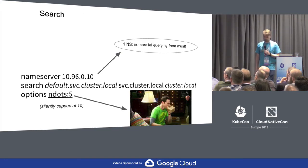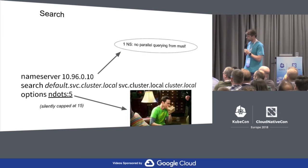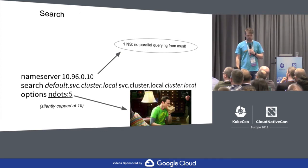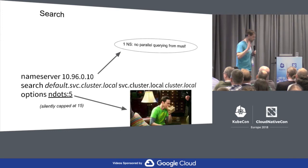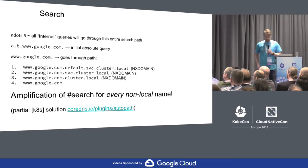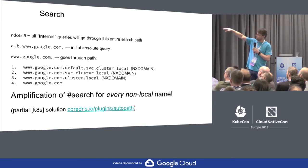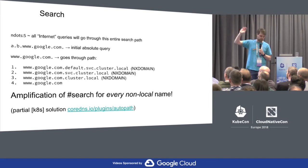Now, search. This is the resolv.conf in Kubernetes in a pod. We have one nameserver — good, so we don't do parallel querying in Alpine. We have a search path which is long-ish, and we have ndots:5, which means we will follow the search path unless the query has more than five dots. Note that ndots:5 is kept silently at a max of 15. ndots:5 basically means that anything you want to look up on the internet will go through the entire search path before you get an answer. A fully qualified name with a trailing dot — like www.google.com. — makes it an absolute query and will not go through the search path. It sidesteps the whole thing.